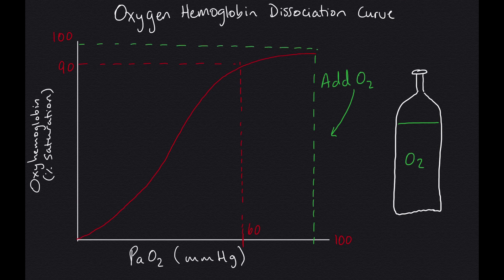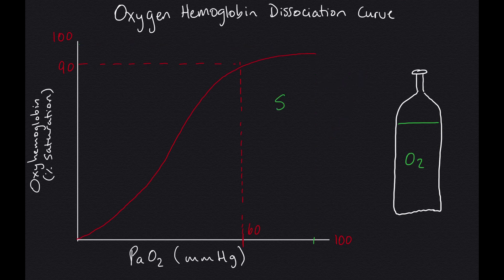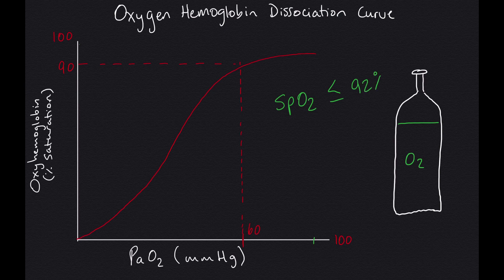92 percent on your SpO2 monitor should be considered a warning sign that arterial oxygen levels and pressures are hindering your patient from oxygenating appropriately. That warning sign requires further investigation and intervention.